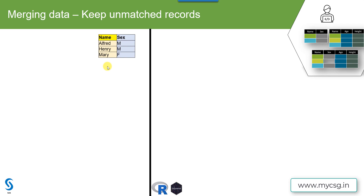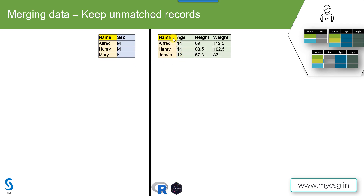Let's say we have an input dataset called SEX, which contains information for three students named Alfred, Henry, and Mary. We have a second dataset named AHW in which age, height, and weight are present for Alfred, Henry, and James. Alfred and Henry are common to both datasets. Mary is exclusive to the first dataset and James is exclusive to the second dataset.